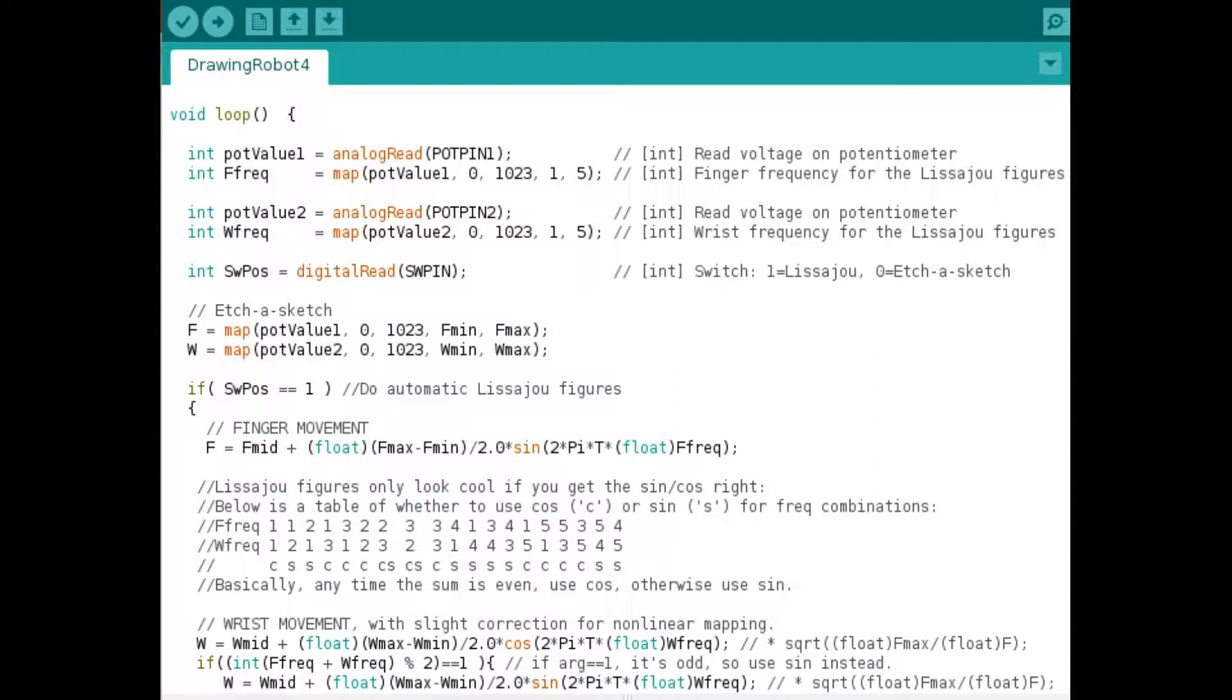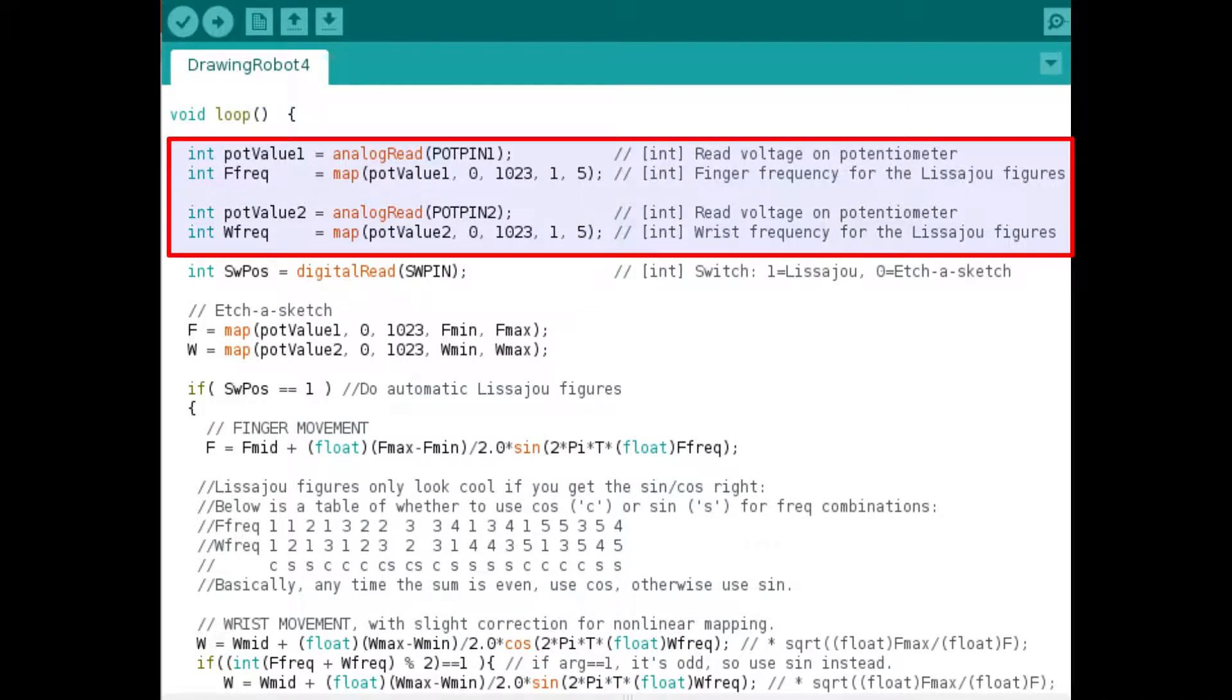Okay, so here's void loop in the program. This is the main loop of the program. The first portion is reading the analog inputs from the potentiometers and assigning that to the positions of the finger and the wrist piece.